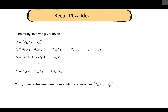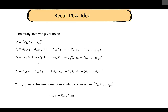We can write this more concisely using vector products. y1 is a1-transpose times X, where a1 contains all p coefficients for the first linear combination. a2 contains all p coefficients for the second combination, and ap contains all p coefficients for the pth combination. PCA involves determining these coefficients.